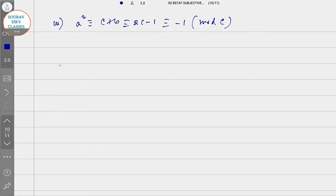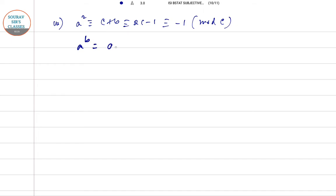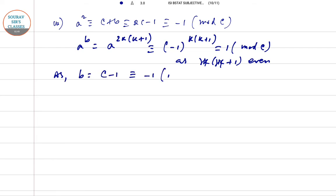Next is again for A to the power B, we can write A to the power 2K into K plus 1. That is minus 1 to the power K plus 1 equals 1 for modulo C.